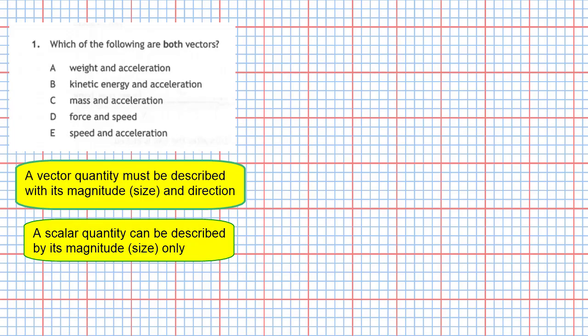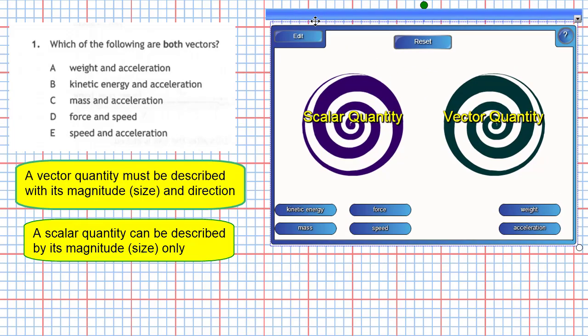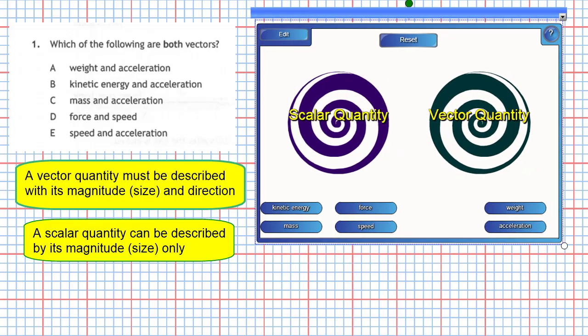To help us we're going to employ our quantity vortexes. If I place the correct quantity into the correct vortex - the scalar vortex or the vector vortex - and it's sucked in, then it'll be correct. This will help us sort out which are vectors and which are scalars.